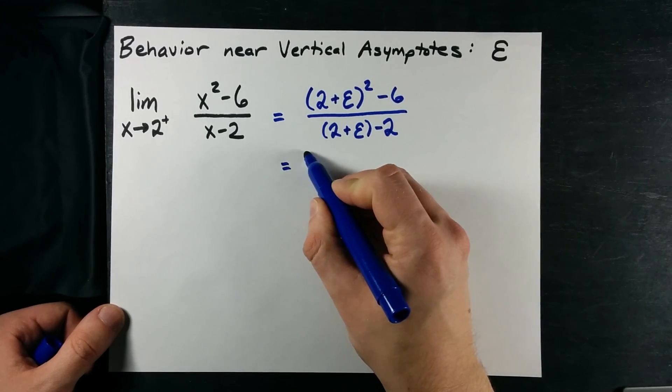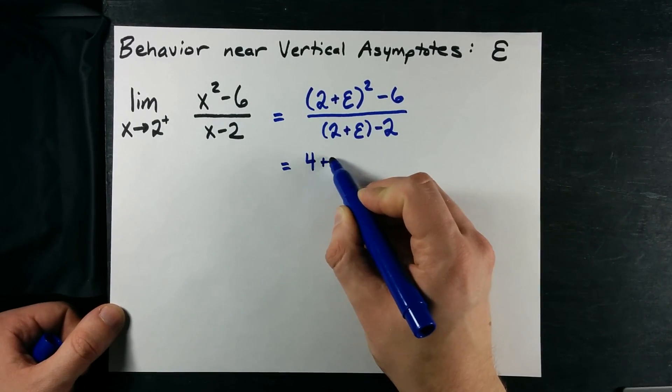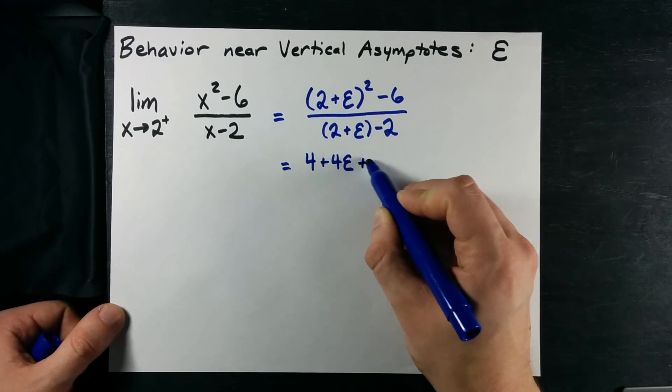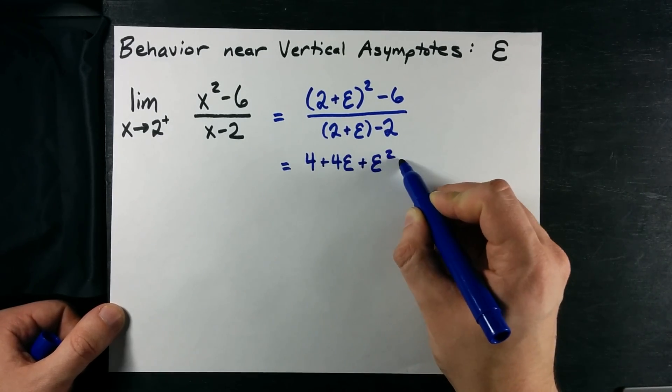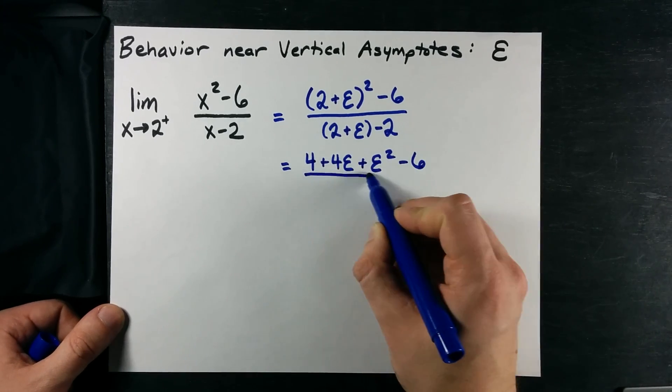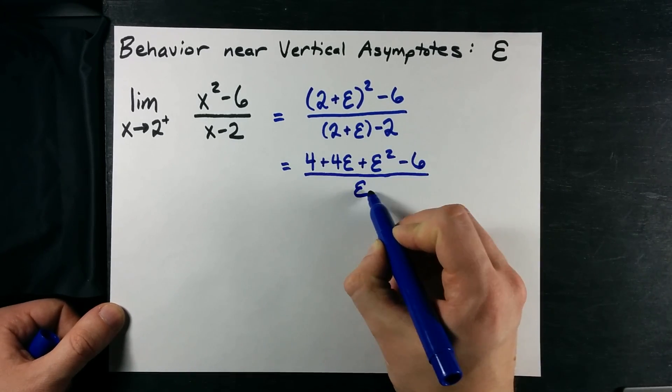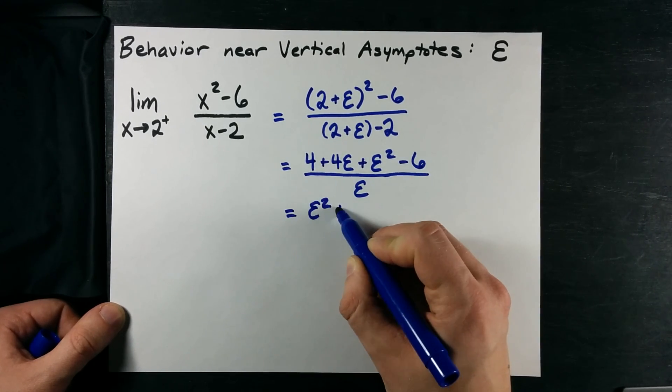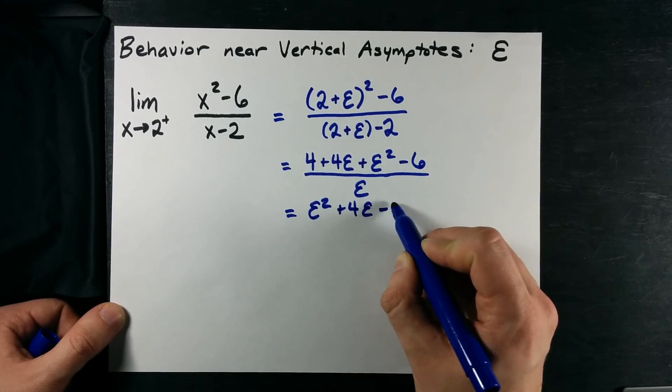Now, what do we get when we expand this? I get 4 plus 4 epsilon plus epsilon squared minus 6 all over just epsilon. I'm just going to reorder those terms. Epsilon squared plus 4 epsilon minus 2.